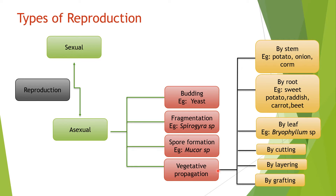We can divide vegetative propagation into different categories. The first one is by the stem, the next one is by the root, and the third one is by the leaf. These — stem, root, and leaves — are the natural ways. Whereas cutting, layering, and grafting are the artificial ways of vegetative propagation.